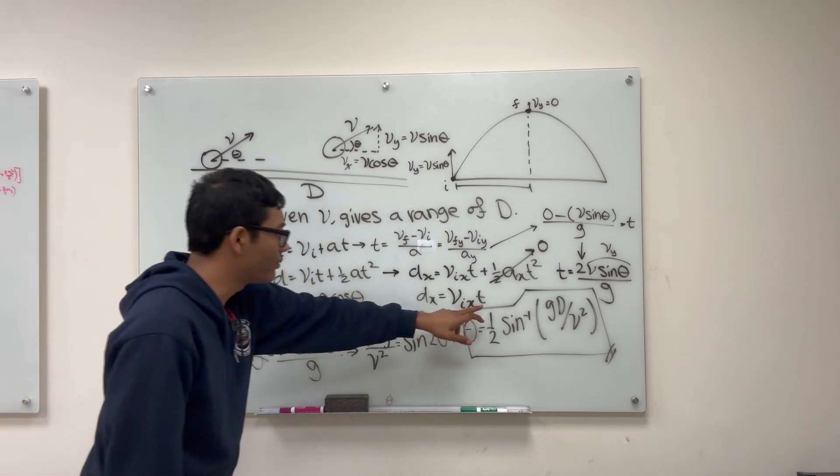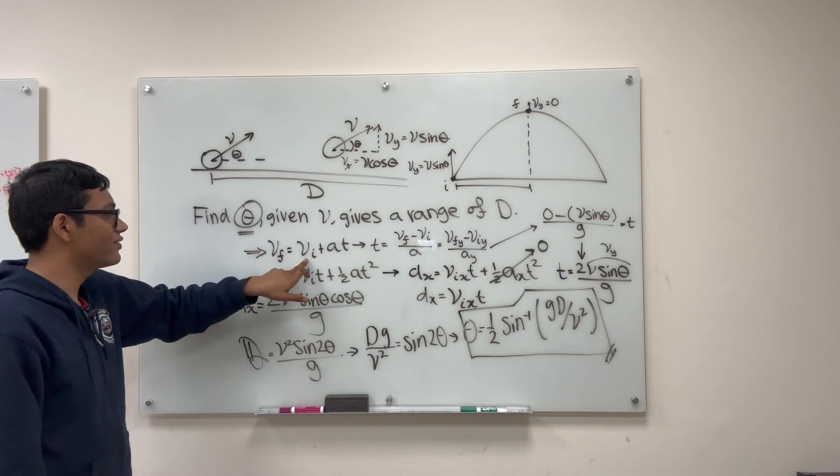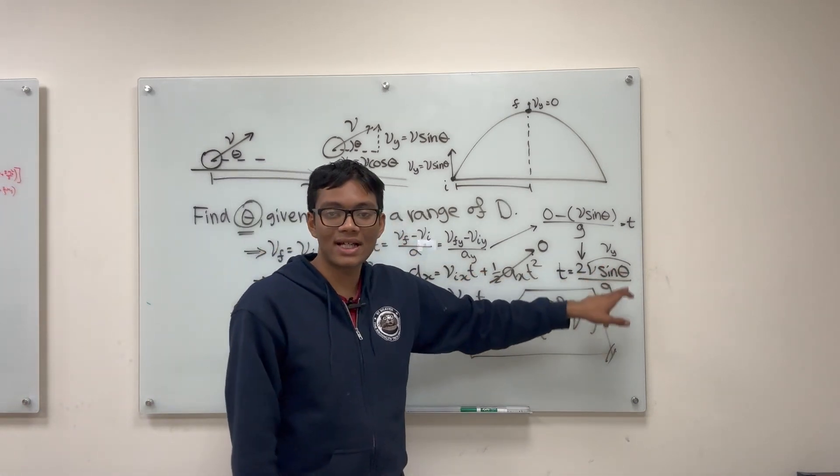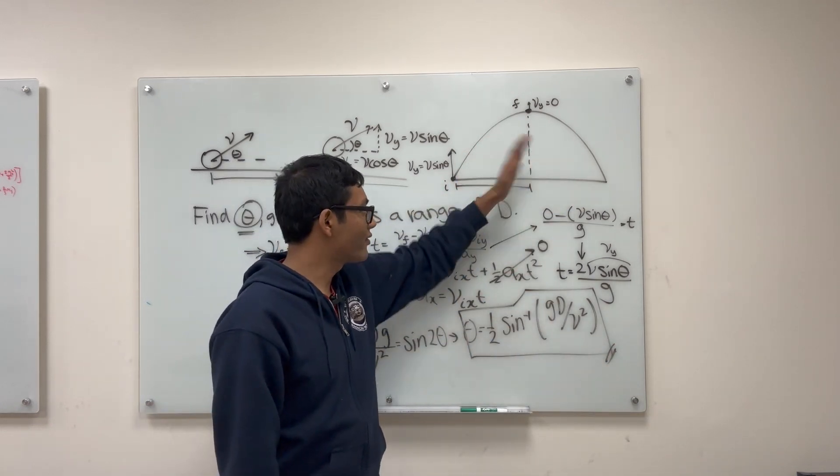But t is determined by the y velocity. So to figure out the airtime of the ball, I needed the other kinematic equation, this one, vf is vi plus at. And so I got t is equal to 2 v sine theta over g.